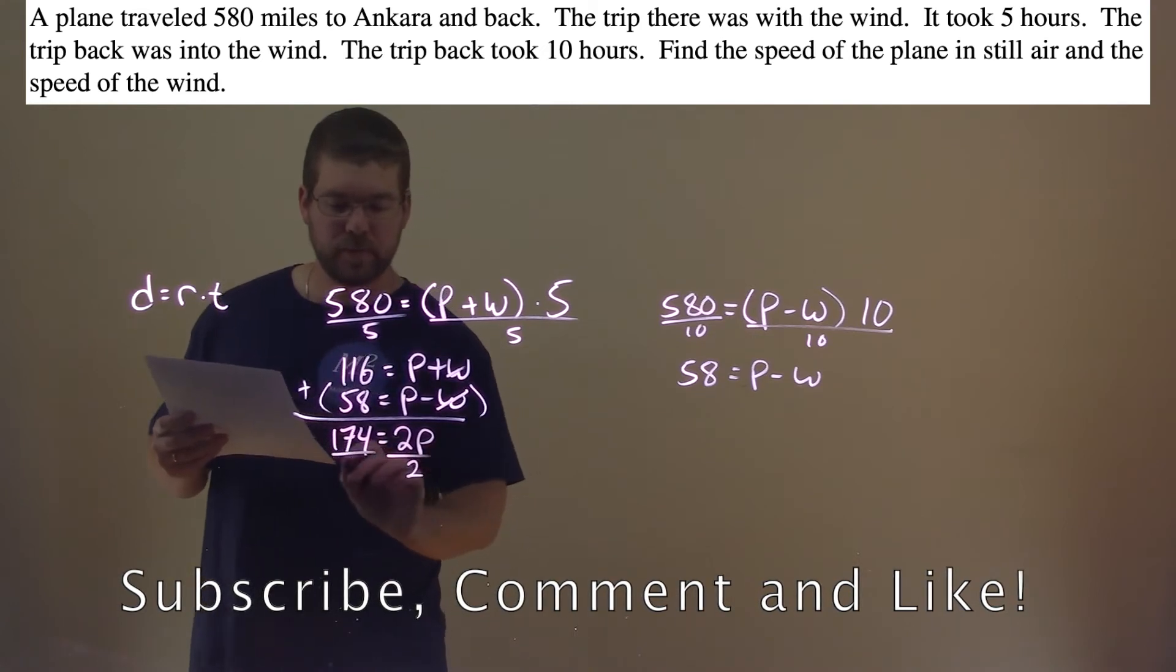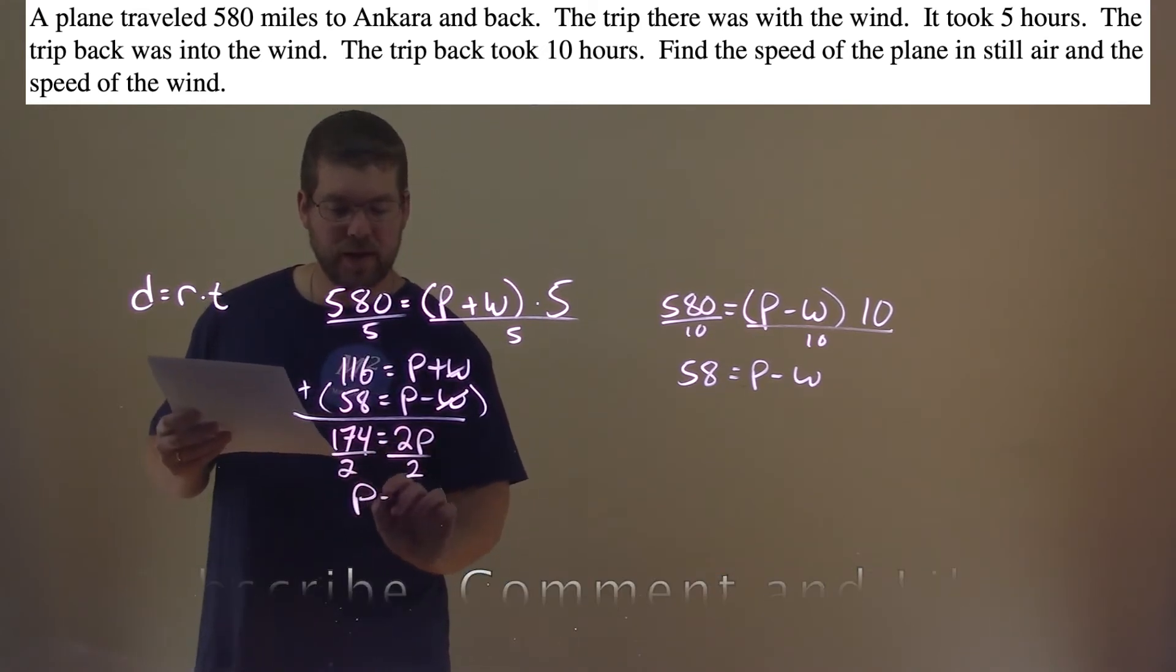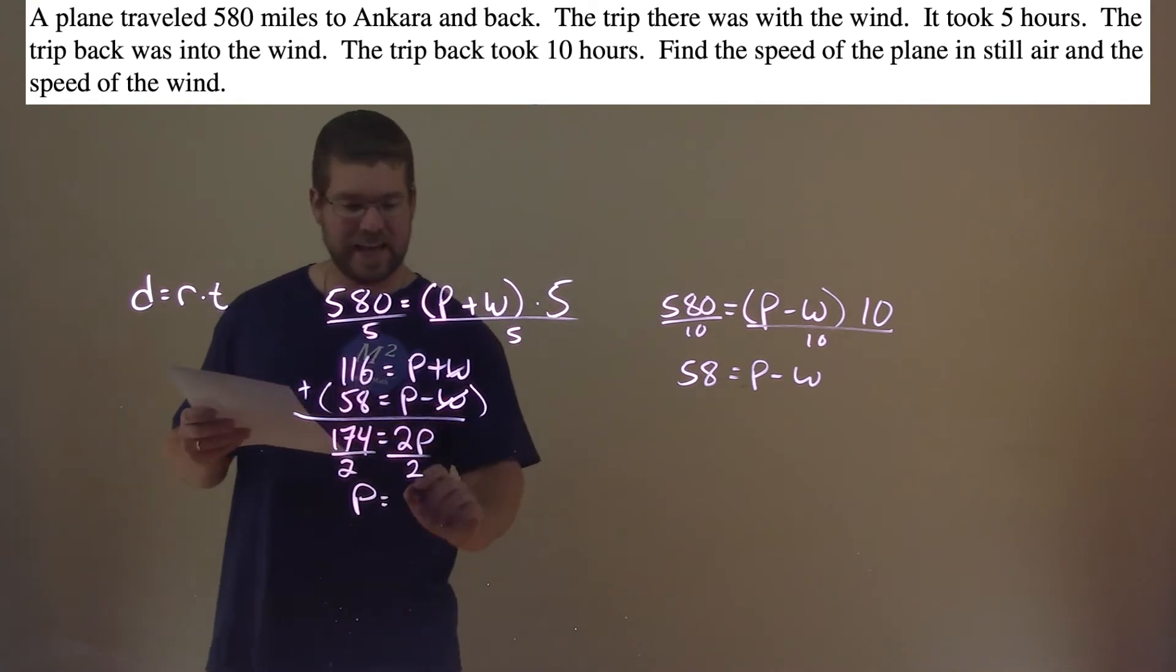So 116 plus 58 is 174, and don't forget, P plus P is 2P. Divide both sides by 2 here, and P is by itself, and 174 divided by 2 is 87. So the plane is traveling 87 miles per hour.